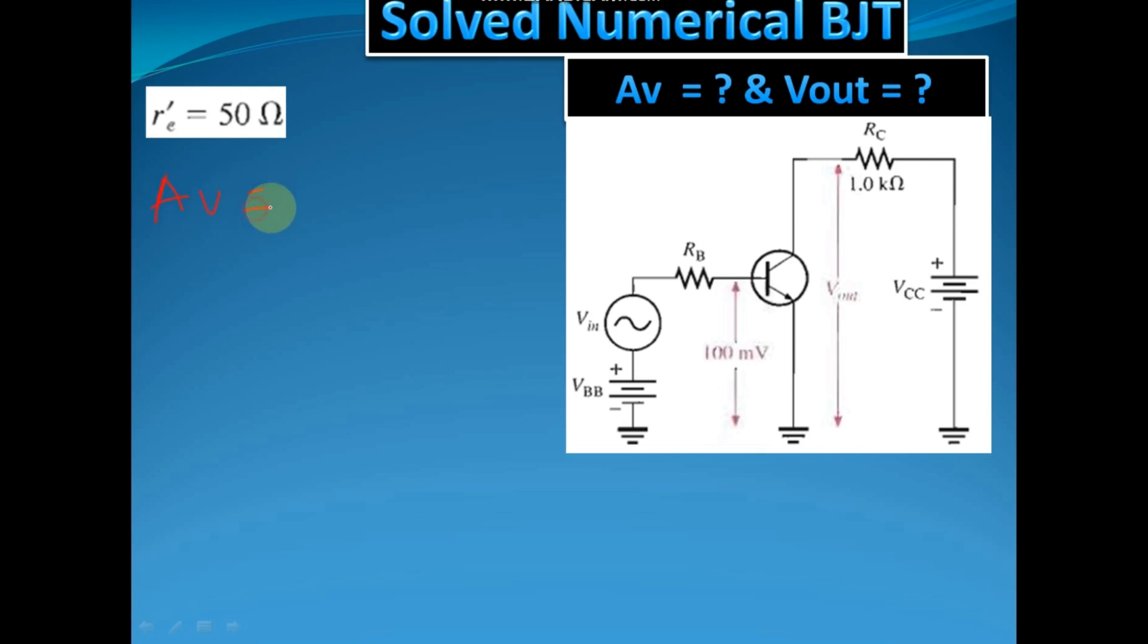Av equals to Rc divided by r'e. You might wonder what is this. Rc is the collector resistance. Here you can see you have given Rc.